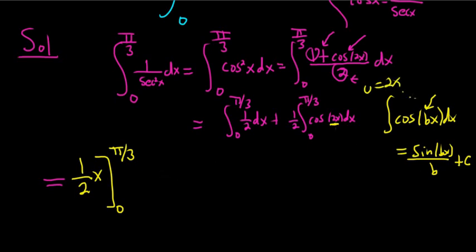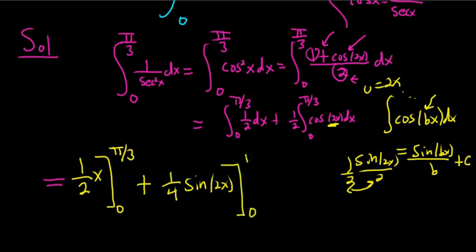So this will be 1 fourth sine 2x, and the 4 comes from the fact that you get sine 2x over 2 times 1 half. 2 times 2 is 4, and we're going from 0 to pi over 3.